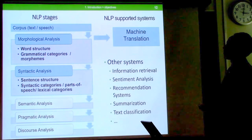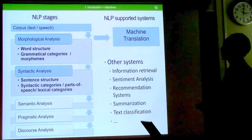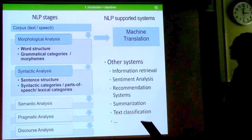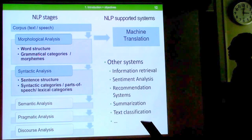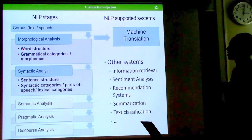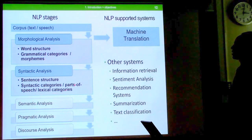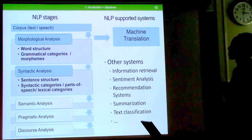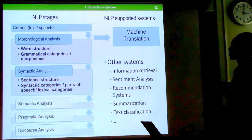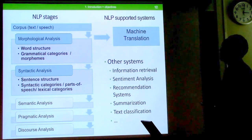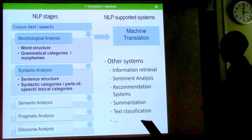The NLP pipeline processes stages one after another, with morphological analysis at the forefront performed at the word level, and syntactic analysis at the sentence level. Our research is positioned here: we researched morphological segmentation and part-of-speech tagging for Tigrinya. The output of these systems is used to enhance the performance of an English-to-Tigrinya machine translation system.